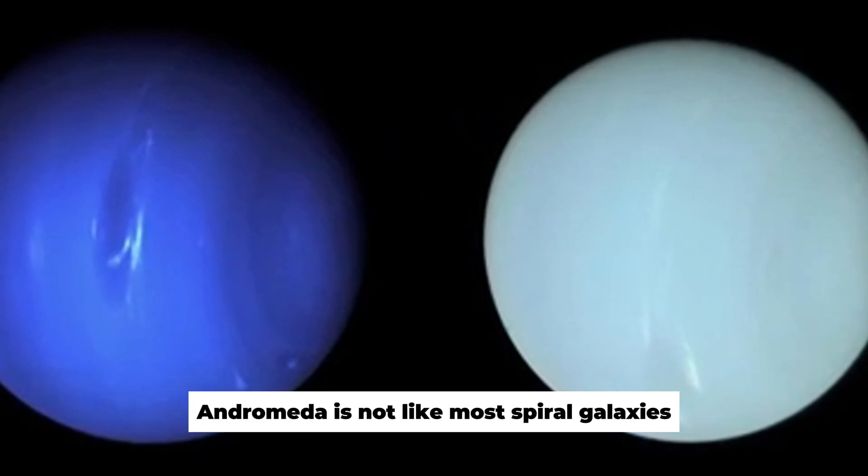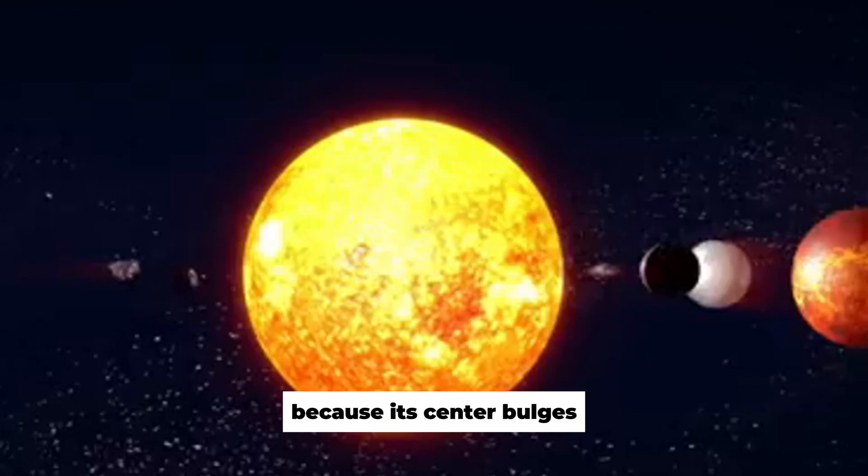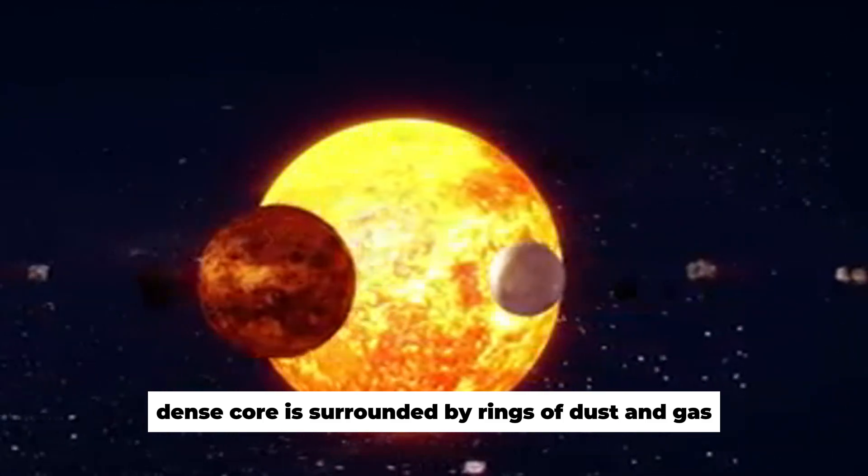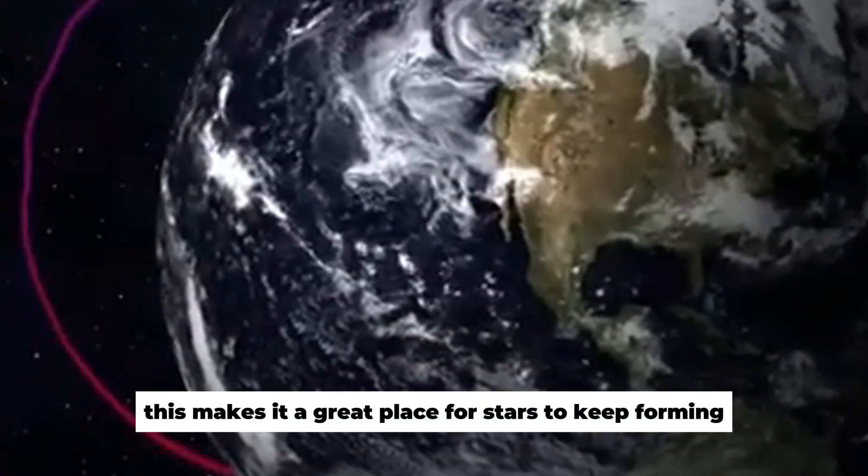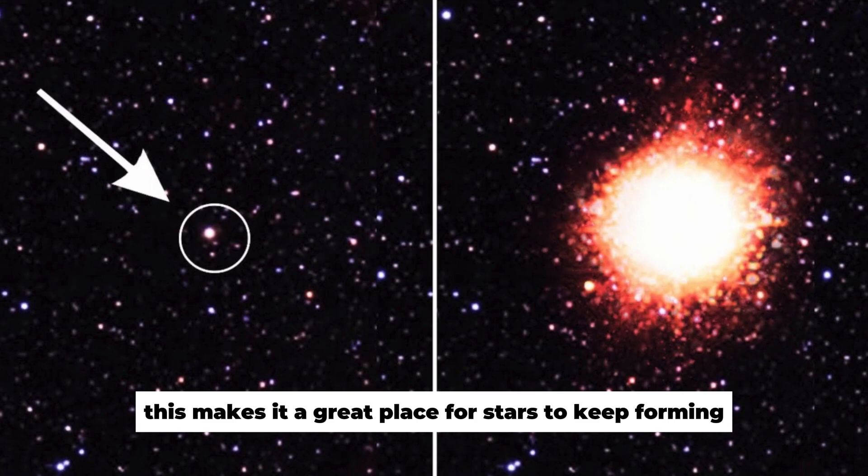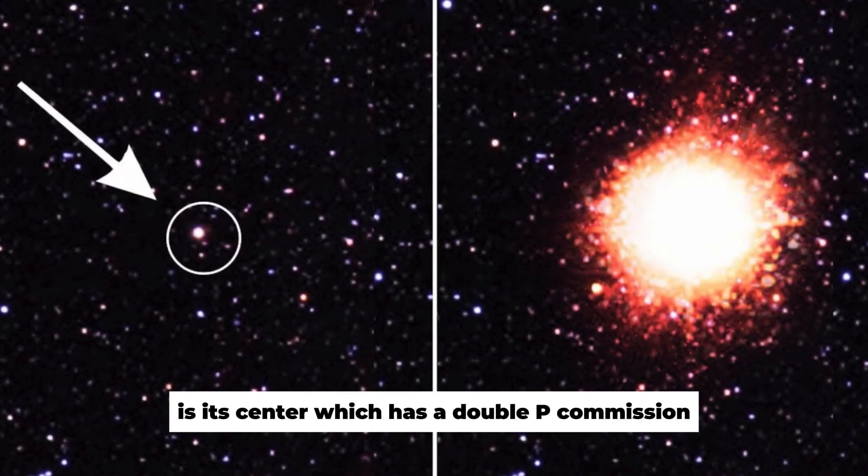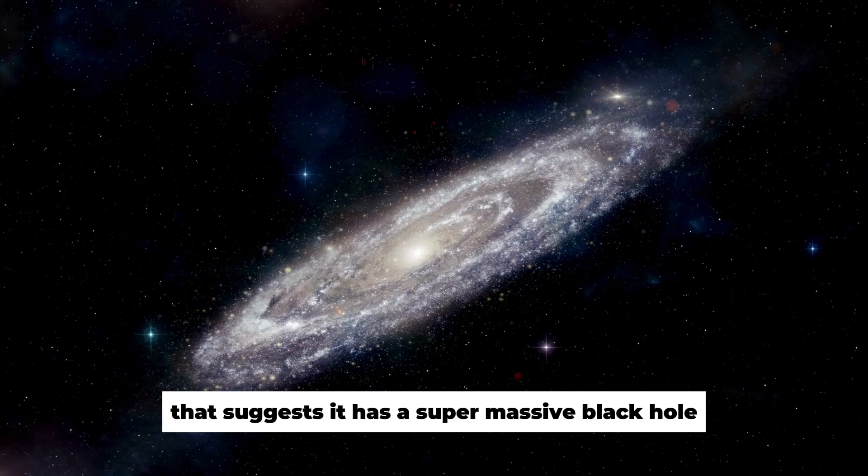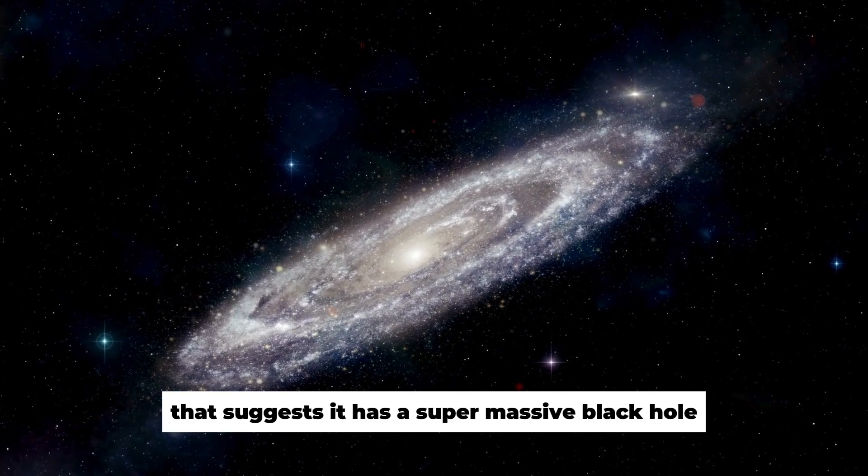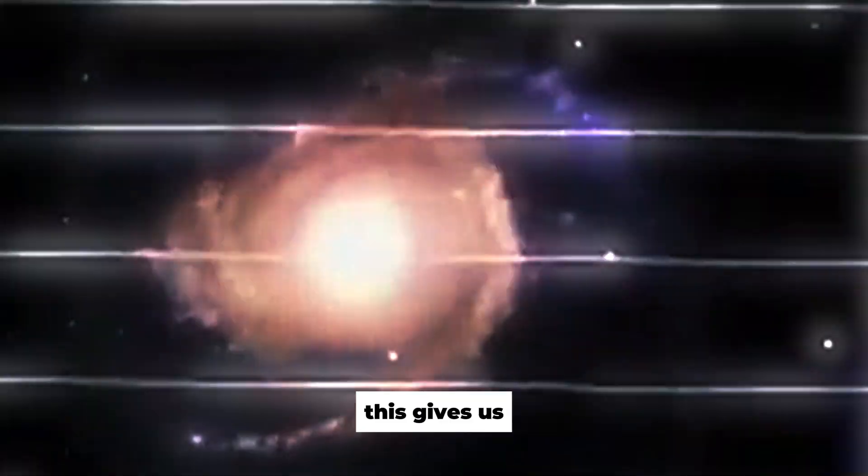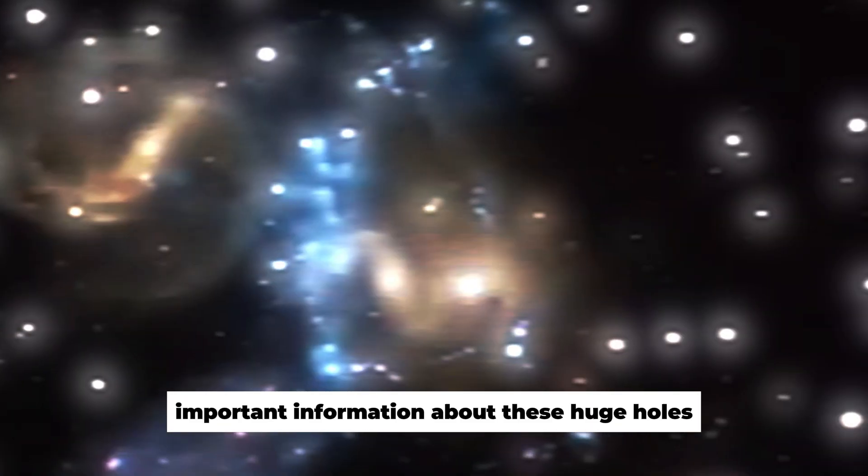Scientists are also interested in how the galaxy is put together. Andromeda is not like most spiral galaxies because its center bulges and its dense core is surrounded by rings of dust and gas. This makes it a great place for stars to keep forming. One of the most interesting things about it is its center, which has a double peak emission that suggests it has a supermassive black hole, similar to but not the same as the Milky Way's.